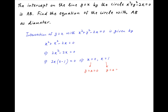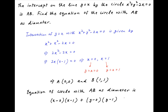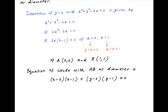When x = 0, y = x = 0, and when x = 1, y = 1. Therefore the points of intersection A and B are (0, 0) and (1, 1). The equation of the circle with AB as the diameter is given by (x - 0)(x - 1) + (y - 0)(y - 1) = 0.